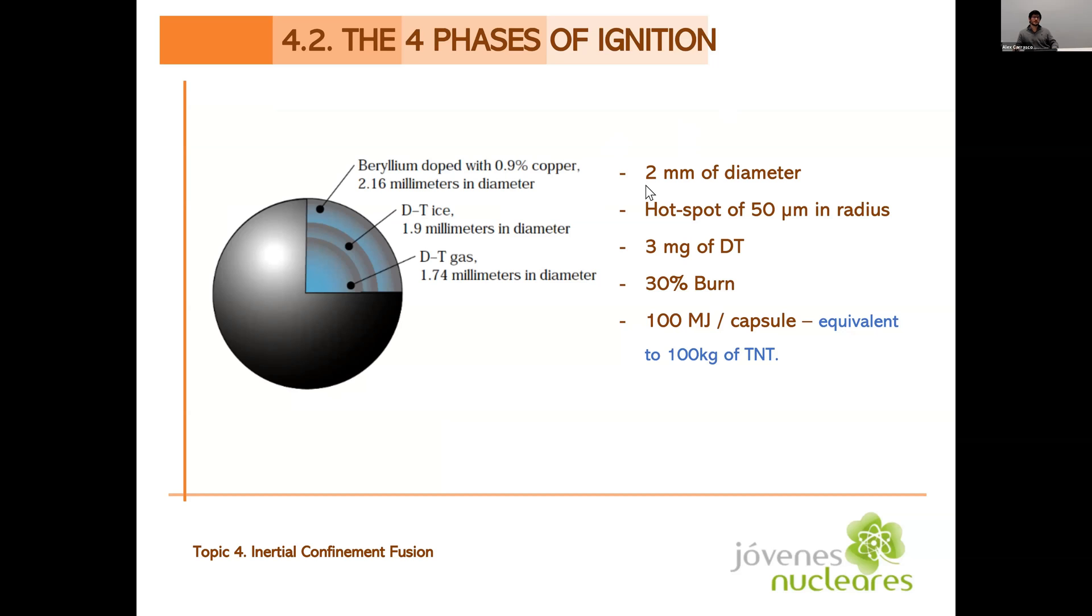So we have a capsule of two millimeters of diameter. We create a hotspot of 50 micrometers in radius. Inside the capsule, we have three milligrams of deuterium tritium, and we will burn 30% of this deuterium tritium. We can't get a burn of the whole capsule, of the whole content. And with this, we produce 100 megajoules of energy per capsule. The problem with energy is that oftentimes we don't have the orders of magnitude in our head for energy, because we're always talking in power, not the power of a nuclear power plant or the power produced by a certain reaction or by a certain fuel. And in energy, the equivalent of 100 megajoules is 100 kilograms of TNT. So from burning 30% of three milligrams of deuterium tritium, we're obtaining the equivalent energy to burning 100 kilograms of TNT. So it is fairly incredible.